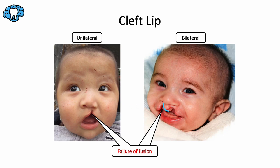You can see where the medial nasal prominence and the maxillary prominence fail to fuse together. Cleft lip more commonly affects boys than girls, more commonly affects Native American and Asian babies, and is more commonly unilateral than bilateral. A unilateral cleft occurs 80% of the time, while a bilateral cleft occurs 20% of the time.